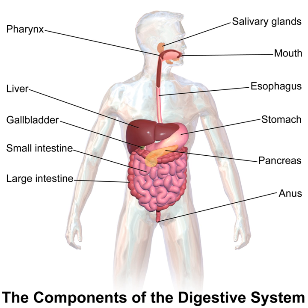In the small intestine, the duodenum provides critical pH balancing to activate digestive enzymes. The liver secretes bile into the duodenum to neutralize the acidic conditions from the stomach, and the pancreatic duct empties into the duodenum, adding bicarbonate to neutralize the acidic chyme, thus creating a neutral environment. The mucosal tissue of the small intestines is alkaline with a pH of about 8.5.